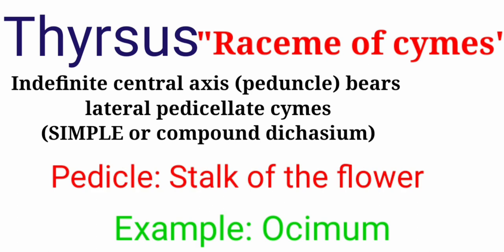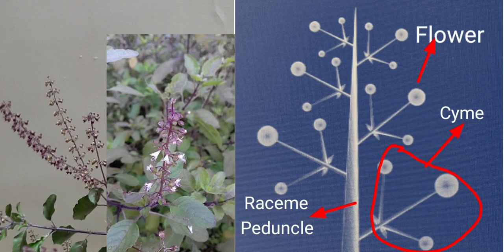Pedicel is defined as the stalk of the flower which helps to attach the flower to the central axis. So if the flower contains the pedicel it is said to be a pedicillated flower, and the inflorescence cyme altogether is called a pedicillated cyme. Here the simple or compound dichasium cyme pattern is present in the tyrosis. The example for this is Ocimum. Here you can find the central axis which has many lateral pedicillated cymes.